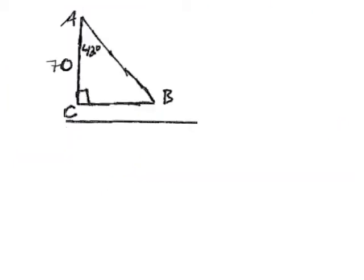Let's do an example. We want to solve this triangle — find all sides and all the angles. Right now I know one leg and I know an angle. The first thing to do is find the other angle. If this angle is 42 degrees, then the two acute angles must add up to 90, so angle B must be 48 degrees.